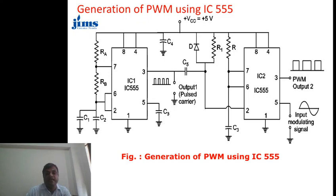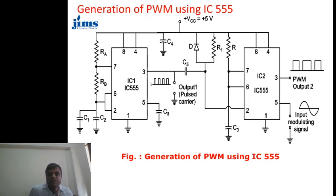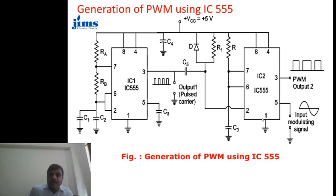For this, we basically use a 555 timer. This 555 timer works in both astable and monostable modes. Here it works in astable mode and here it works in monostable mode. In the monostable case, for one input pulse it provides one output; for the second input it provides the second output. The output of this 555 timer is then applied to an integrator circuit, which converts the pulse into a certain waveform. The 555 timer here works as an astable multivibrator.